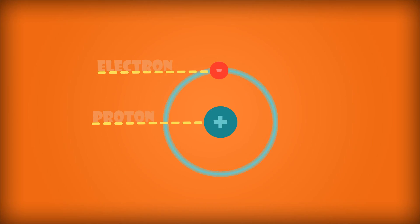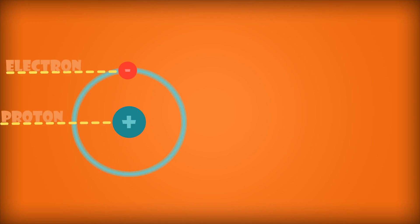Pretty simple so far. However, everything else other than hydrogen has another subatomic particle known as a neutron, which, unlike a proton and an electron, has no charge.